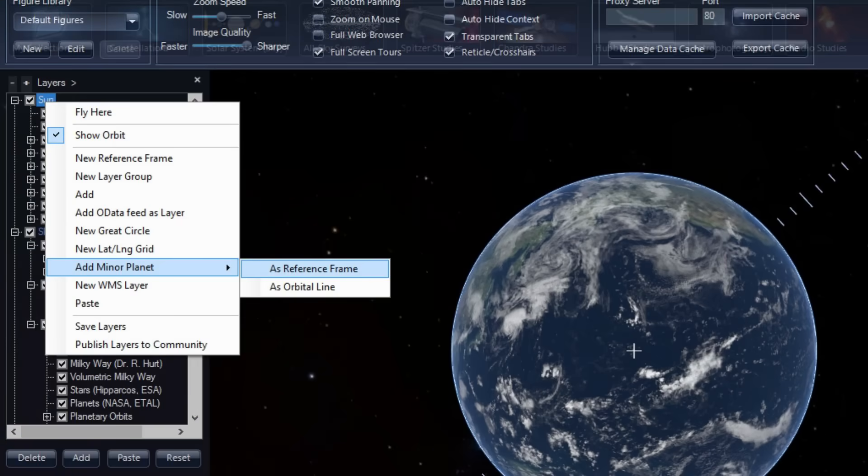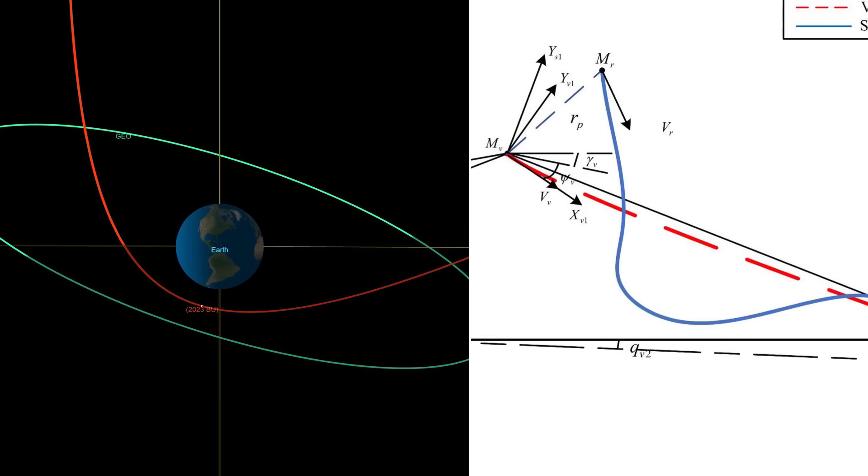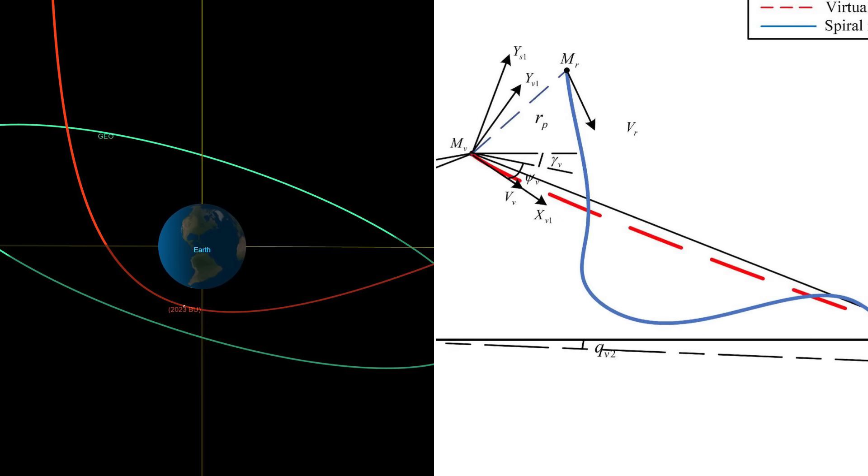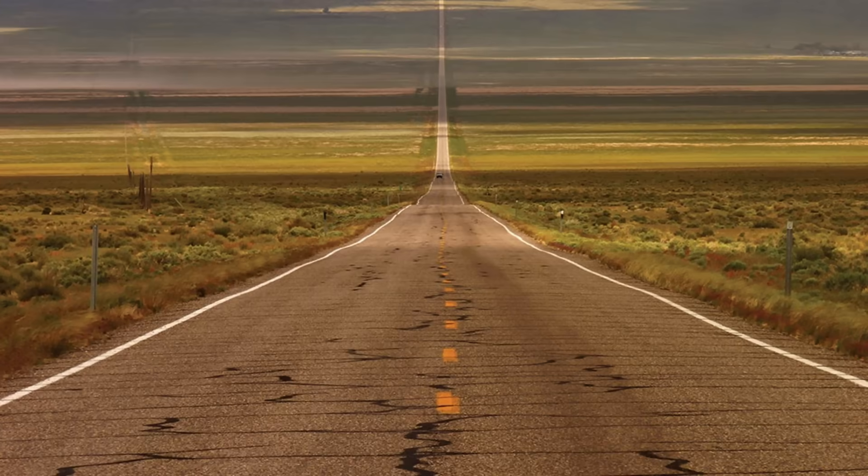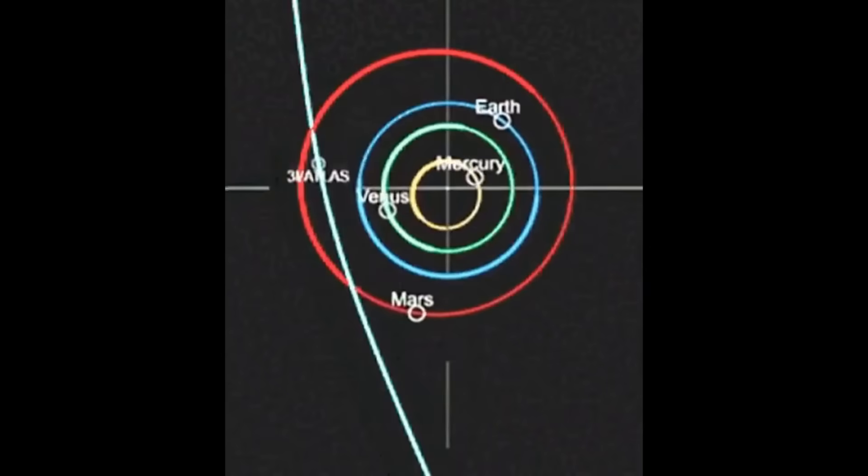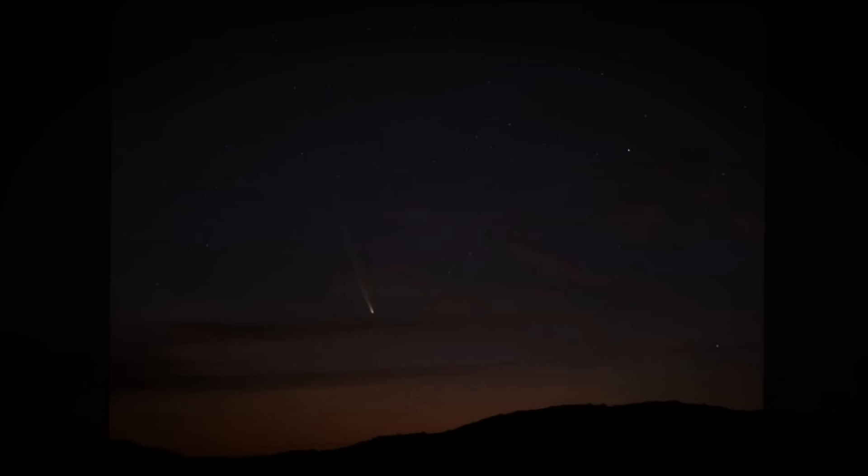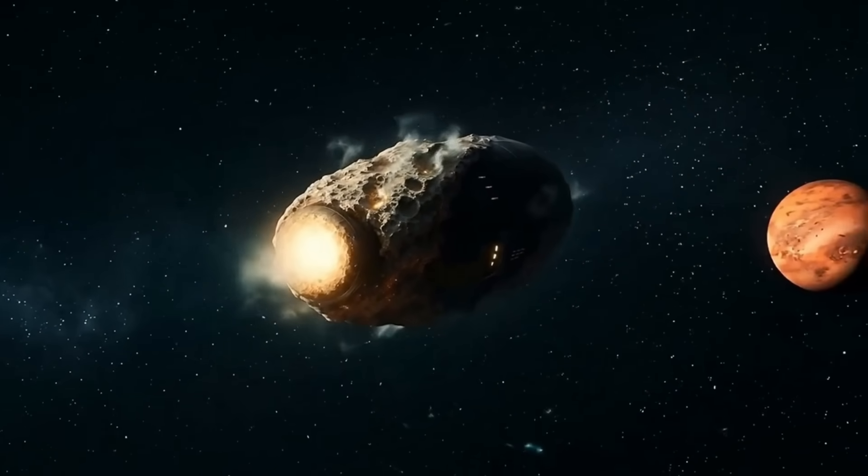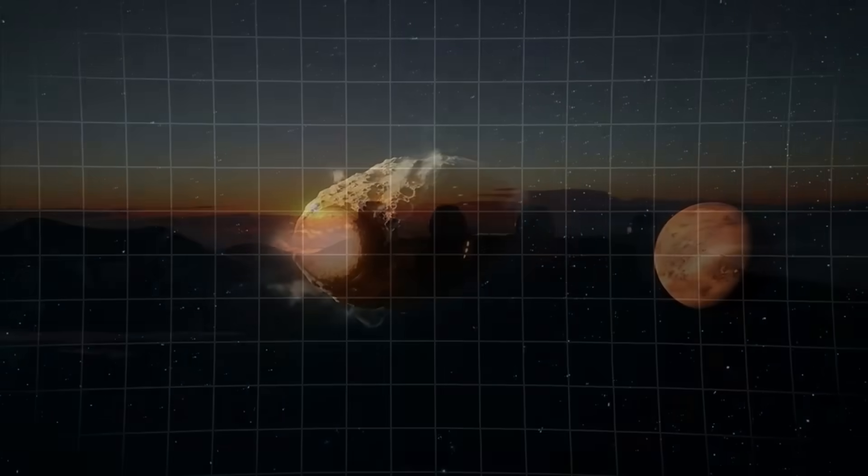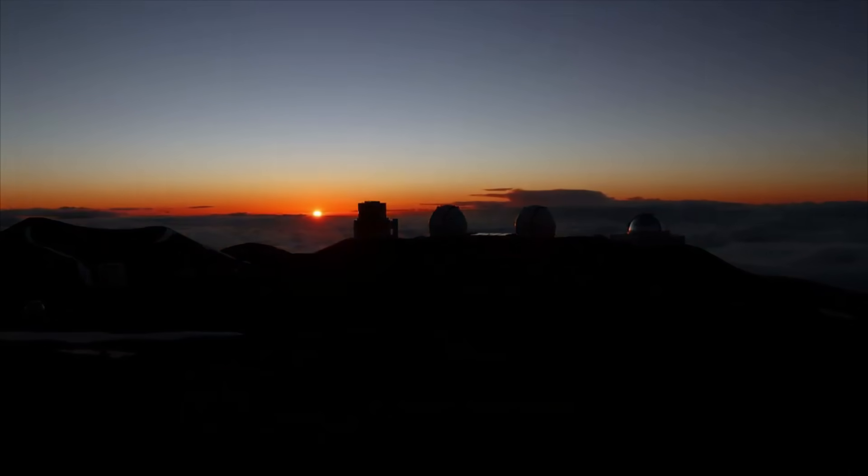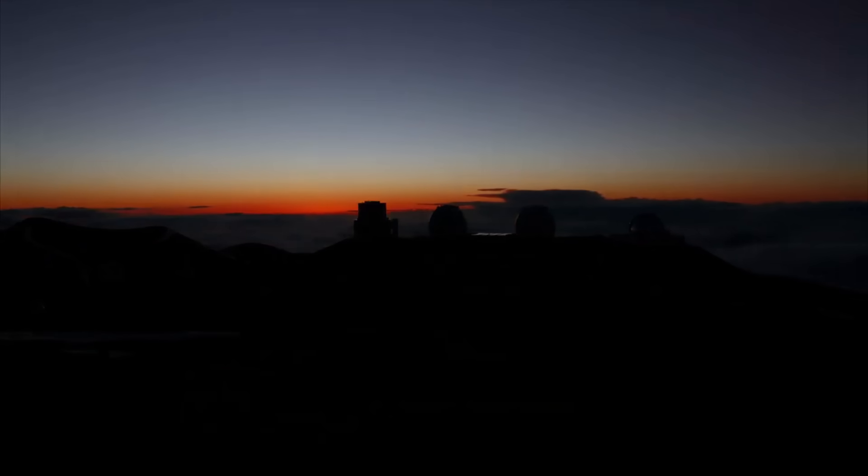The orbital elements catalogued by the Minor Planets Centre confirm a hyperbolic trajectory—eccentricity greater than one—a mathematical signature that guarantees it will never return. Its inbound track, outbound escape, and the sharpness of its solar swing all point to a brief, one-time passage. Every kilometer it travels now is a kilometer closer to the Sun's domain, and a kilometer further from the only vantage points capable of tracking its journey.